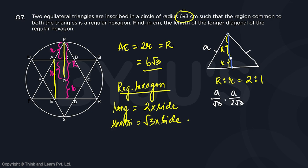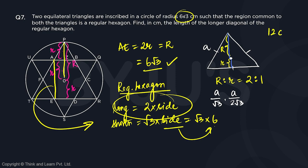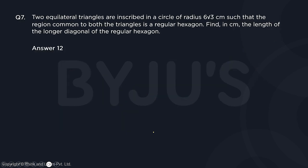So if we compare, the shorter is root 3 times side, which turns out to be root 3 into 6, that means the side is 6, which means the longer diagonal is going to be 2 into 6, which is 12. So the longer diagonal is going to be 12 cm long. Since it is a theta question, we are supposed to type in 12.